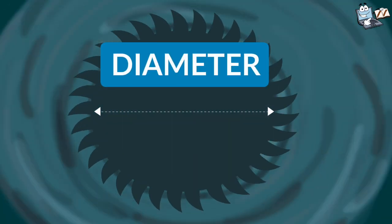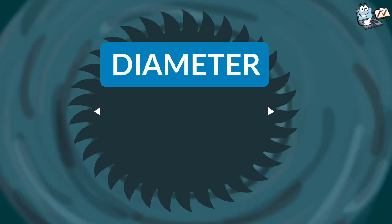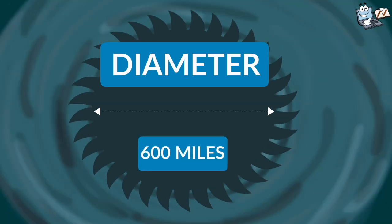The diameter - a hurricane's diameter is measured from one side to another side. It varies depending on the strength. Sometimes it covers over 600 miles.